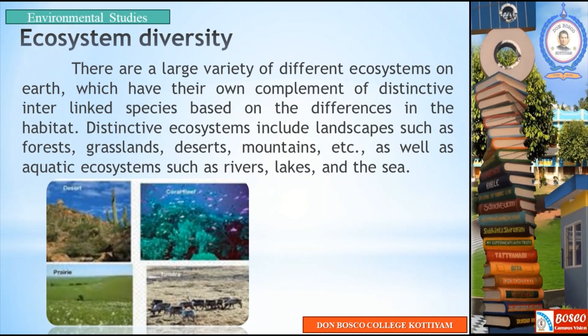The third component is ecosystem diversity. There are a large variety of different ecosystems on earth which have their own complement of distinctive interlinked species, based on differences in the habitat. There are different types of ecosystems — desert ecosystem, forest ecosystem, aquatic ecosystem, grasslands ecosystem. For example, in India, there are different types of ecosystems, so this is ecosystem diversity.